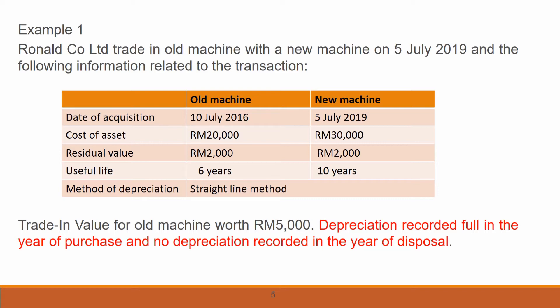The method of depreciation is straight line method. The trade-in value of the old machine is RM 5,000. Depreciation is recorded in full in the year of purchase and no depreciation is recorded in the year of disposal, meaning the company uses the straight line method on a yearly basis.